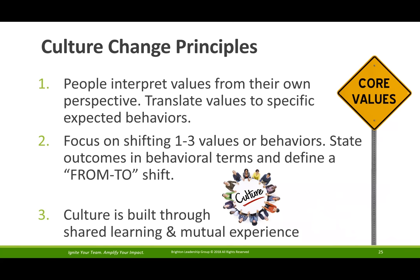For example, the value 'we do the right thing.' The organization started having people do things that were actually against the rules of their industry, making them out of compliance — but they were doing the right thing for the customer. Nobody defined what the right thing was with actual examples and clear language. So when people were doing the right thing for the customer, they weren't doing the right thing for the organization. That's a beautiful example of how people can interpret values from their own point of view — what it meant to them — versus those very specific behaviors.